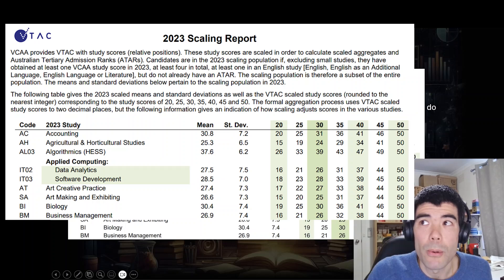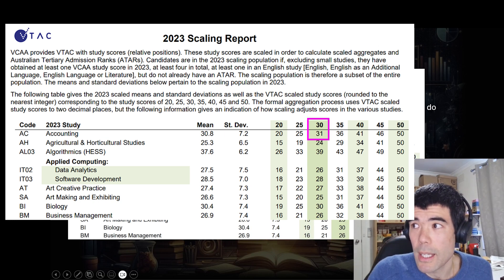which is quite good. It shows from the raw scores in the bold up here, what happened to them after scaling. So for example, raw 30 in accounting is scaled up 1 point to 31. 50 generally stays at 50.